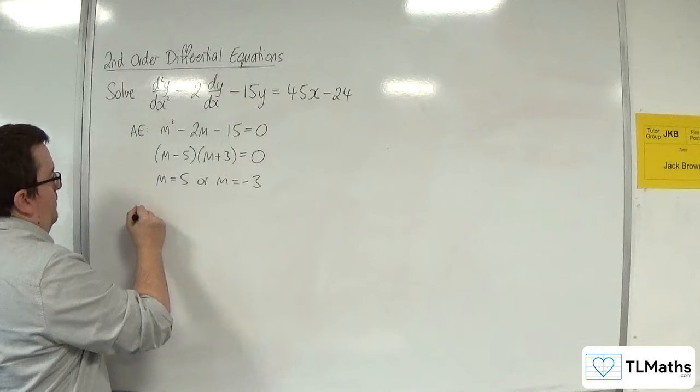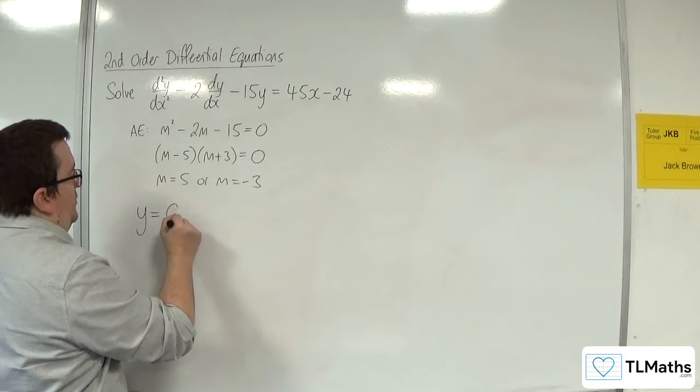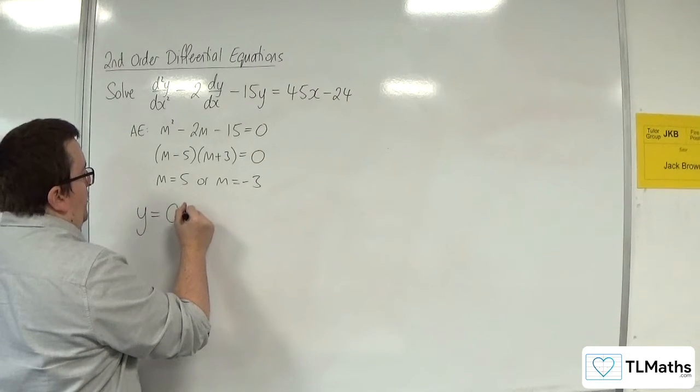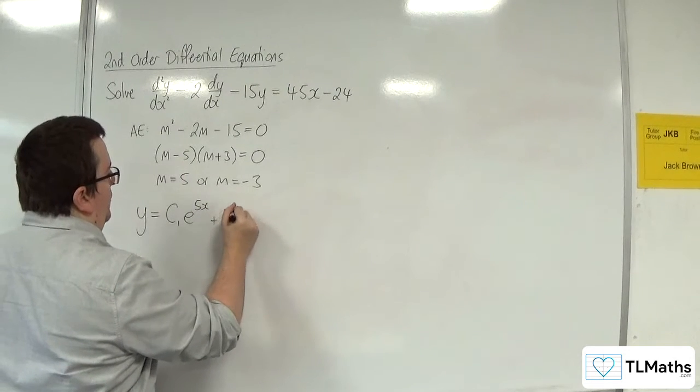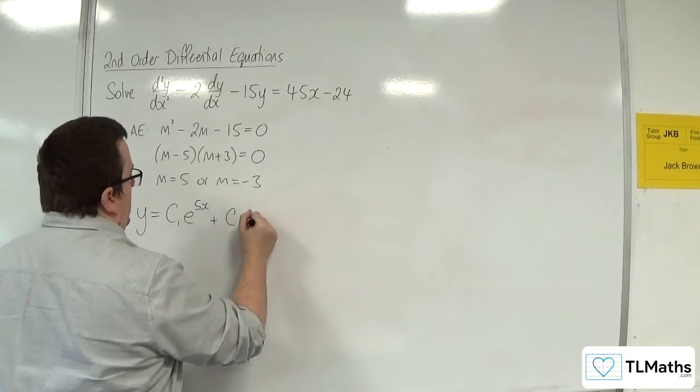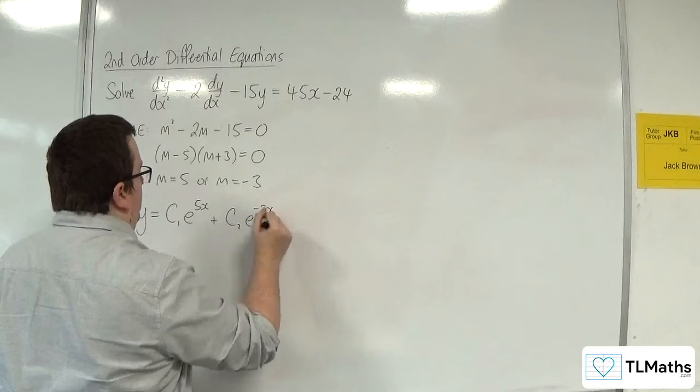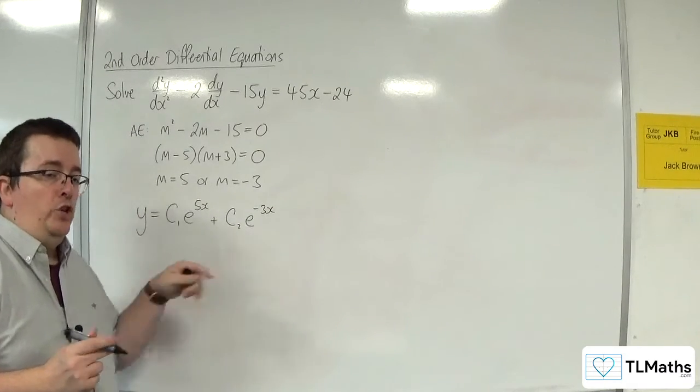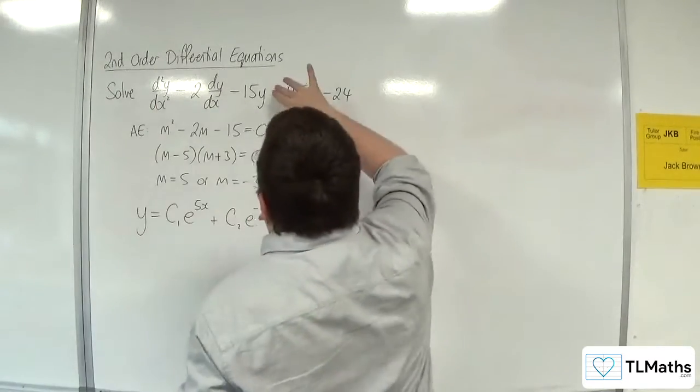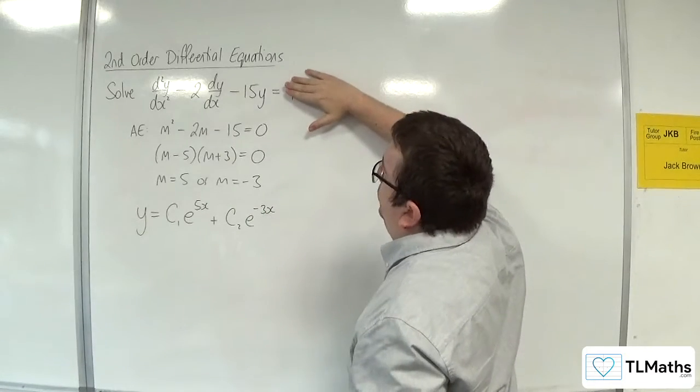So we've got now the complementary function, y = C₁e^(5x) + C₂e^(-3x). So that solves the homogeneous equation where we've got this second order differential equation equal to 0.